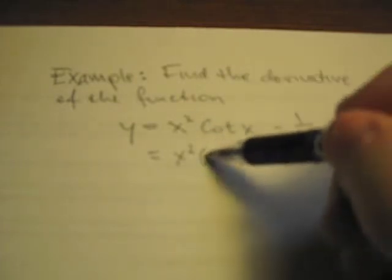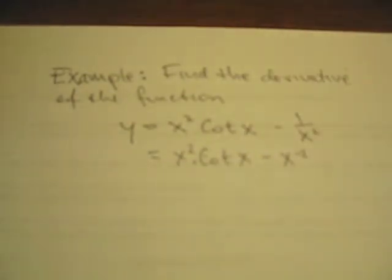The next thing you should notice is that we actually have the product of two functions, x squared and cotangent x. So this will require the use of the product rule.